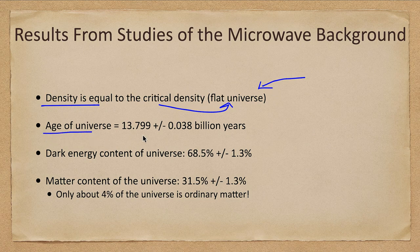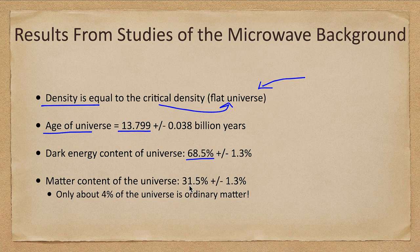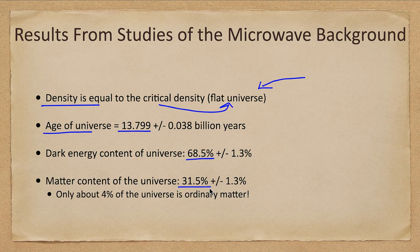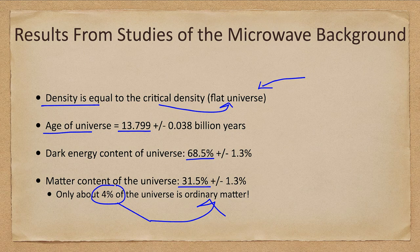How old is the universe? About 13.8 billion years old, based on all of our measurements. Dark energy consists of about 68.5% of the universe. Matter content of the universe is 31.5%, but only 4% of that is the ordinary matter that you and I and Earth and the stars and the galaxies and everything else that we are studying is made up of.